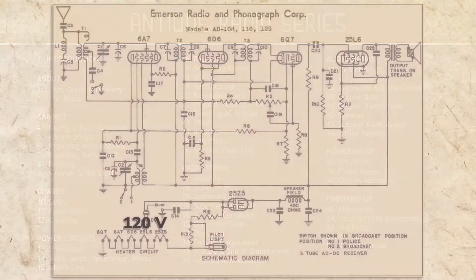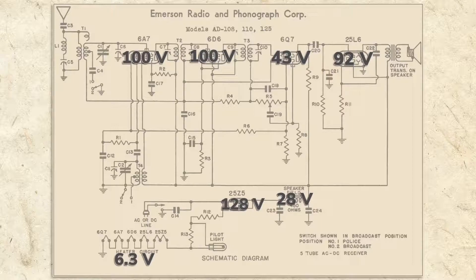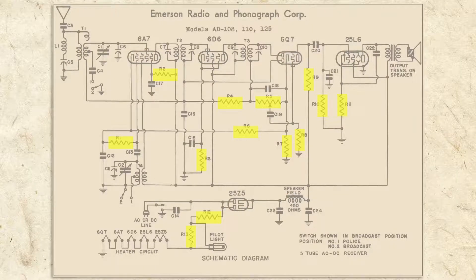Our radio has just one 120 volt power source, but requires many different voltages throughout its circuit. Thanks to resistors, which we've learned reduce voltage, this is easily accomplished.